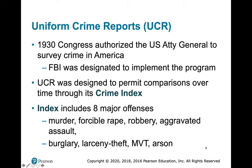The UCR is designed so you can compare things over time using a crime index. That index includes eight major offenses — four crimes against people and four crimes against property. Crimes against people include murder, rape, robbery, and aggravated assault. Property crimes include burglary, larceny, motor vehicle theft, and arson.